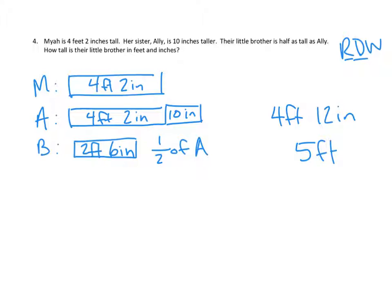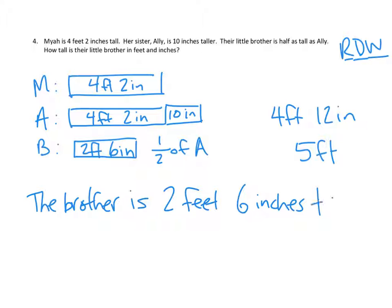Well, it looks like we're already done. Let's do our write. The brother, who doesn't even get a name, is two feet six inches tall. That's half of Allie's height, and Allie herself is a little taller than Maya. Awesome.